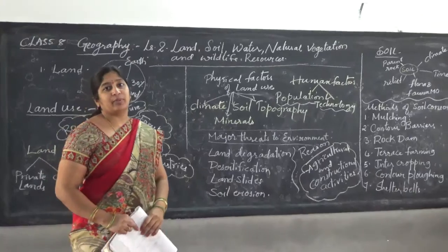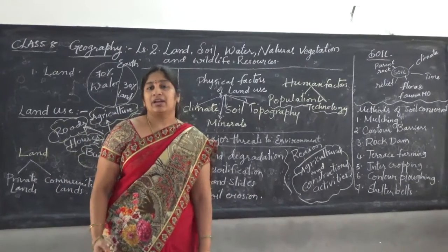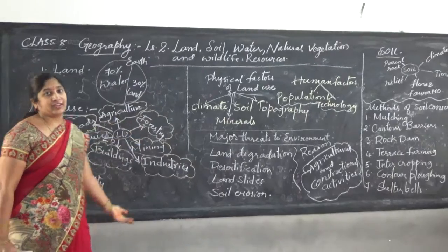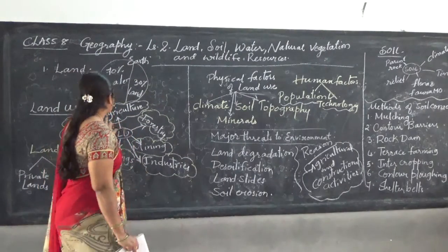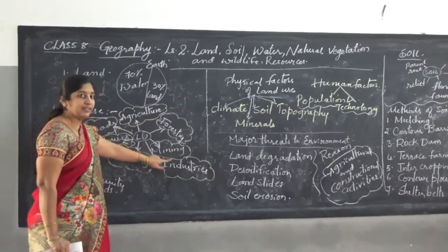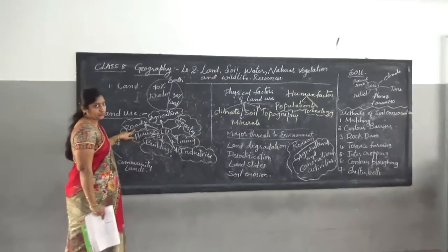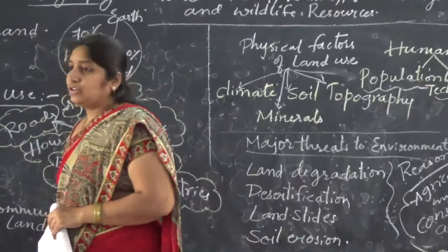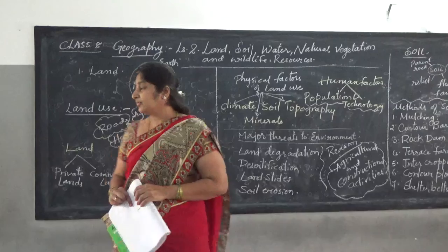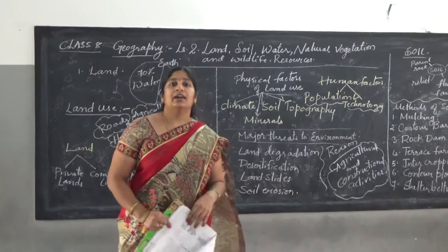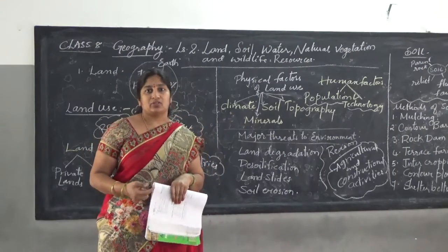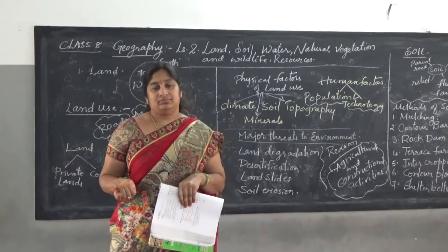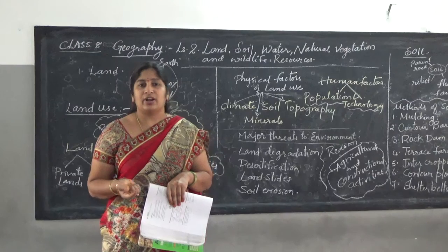Land is used for many purposes by many people because without land we cannot do our activities. Primary activity, secondary activity, or any economic activity is done on land — such as agriculture, forestry, mining, buildings, houses and goods. Land is used in two types on the basis of ownership: private lands and community lands. Private lands are owned by individuals for housing, building, or constructional activities. Community lands are used by a group of people for collection of goods, plants, or any collective activities.